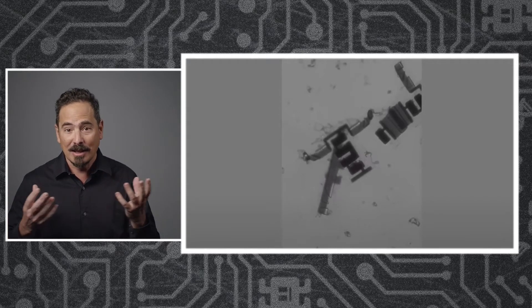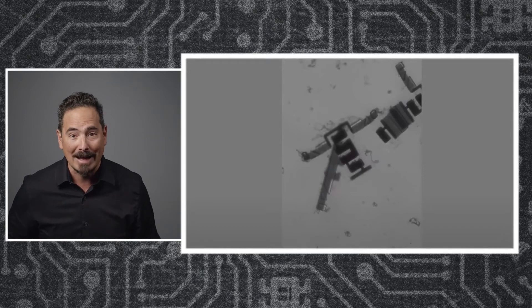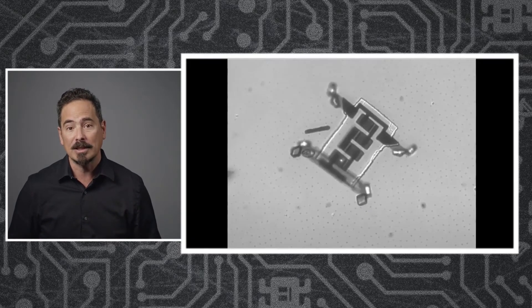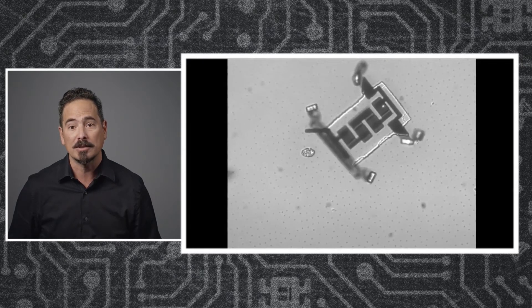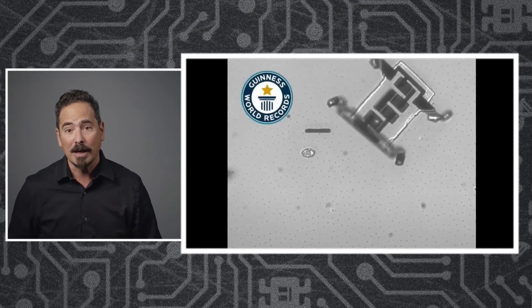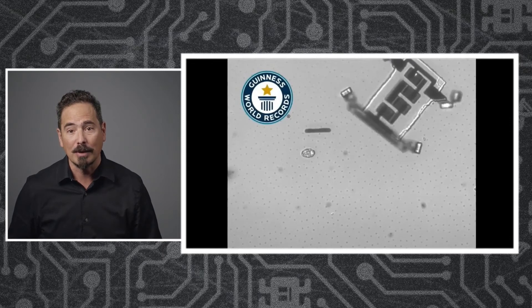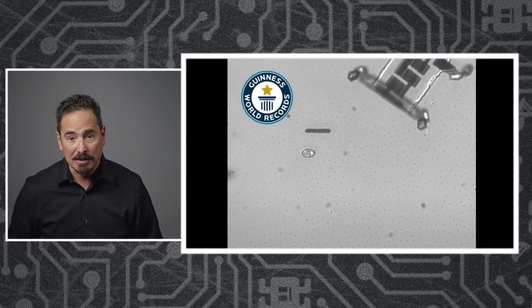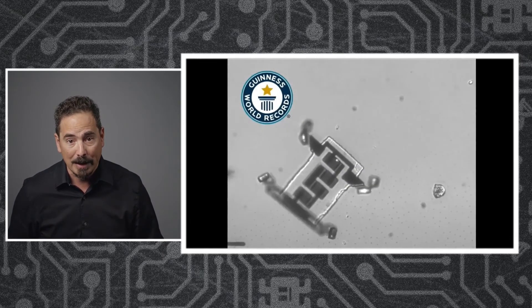Now, as amazing as BroBot is, he also has some defects. That chest hair—the technical term for that is schmutz. Clearly, we ripped off its back legs. But if you work hard to solve these problems, you can create what is now the world's smallest walking robot: a 40 micron by 70 micron by 2 micron thick robot that folds itself up and walks off the page.